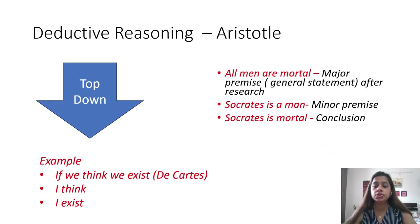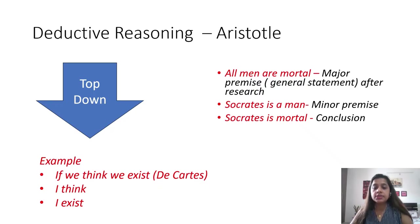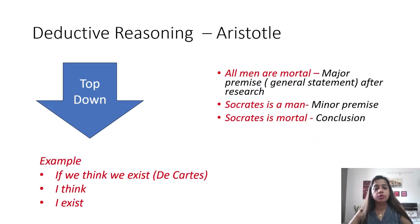Deductive reasoning was given by Aristotle. And hence in all the books — especially philosophy books that talk about deductive reasoning — you will always find this example: 'All men are mortal' is the major premise. 'Socrates is a man' is the minor premise, which includes the example that we want to prove or get a conclusion about. And hence, 'Socrates is mortal' is the conclusion. This is a very famous example of deductive reasoning.